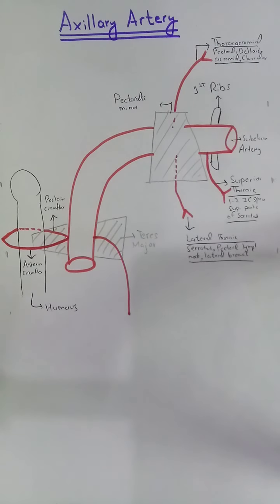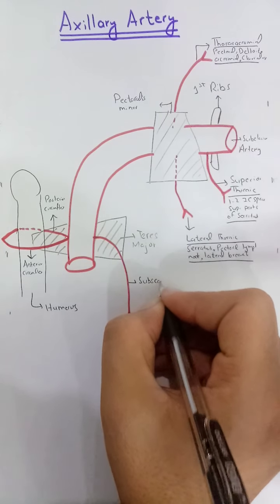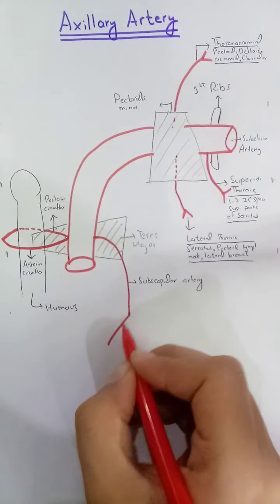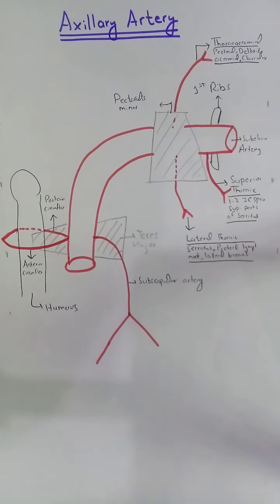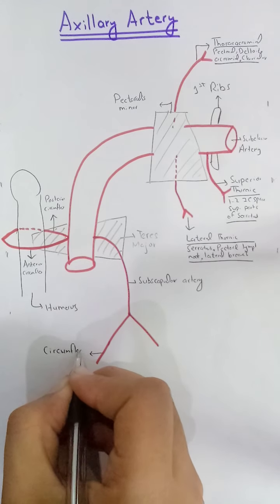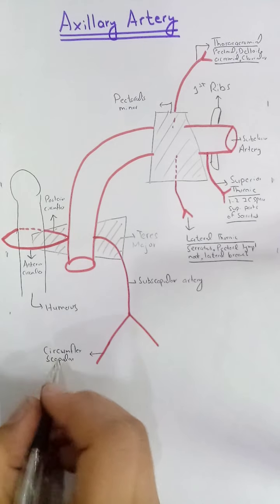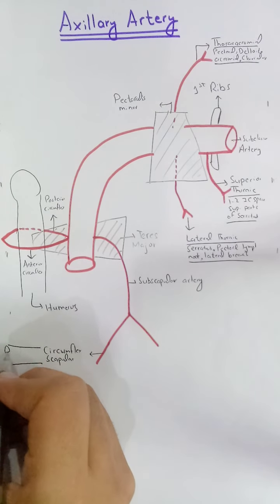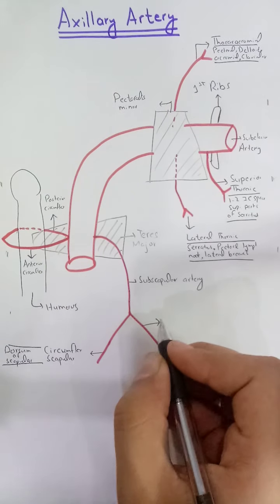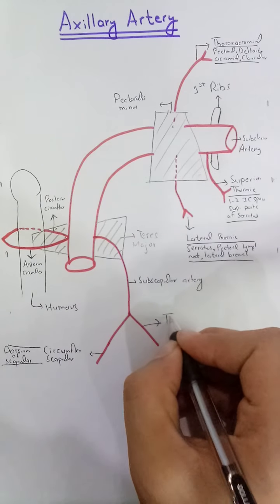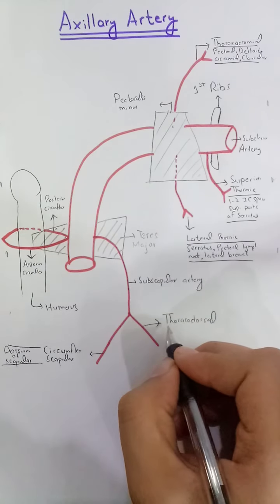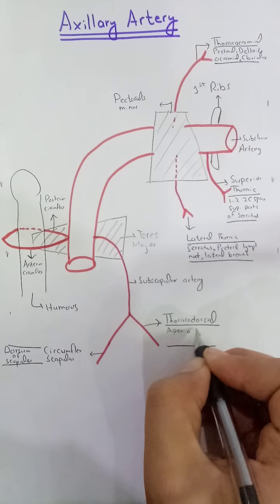The third branch of the third part is the subscapular artery. This subscapular artery divides into two branches: the longer one is the circumflex scapular artery, which supplies the dorsum of the scapula; and the shorter branch is the thoracodorsal artery, which supplies the latissimus dorsi muscle.